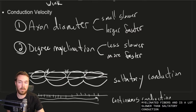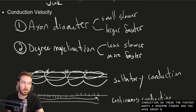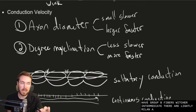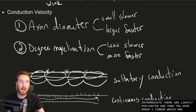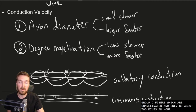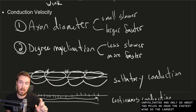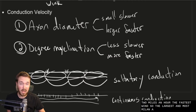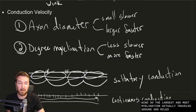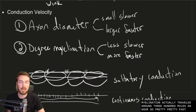Group A fibers are the fastest, group B fibers are intermediate and lightly myelinated, and group C fibers are unmyelinated and travel only about two miles per hour. The fastest fibers — largest diameter with most myelination — can actually travel around 300 miles per hour.